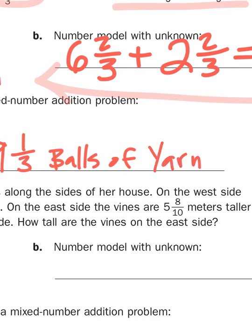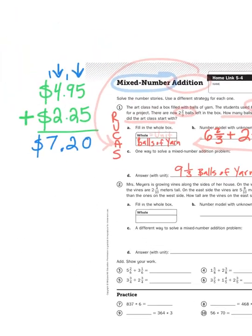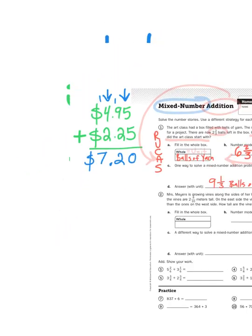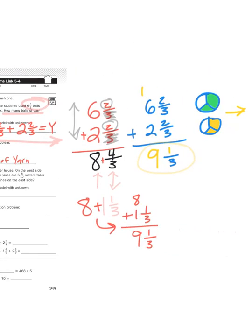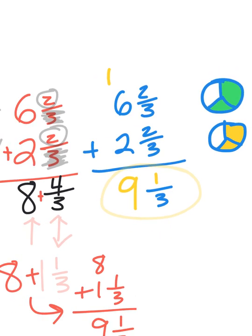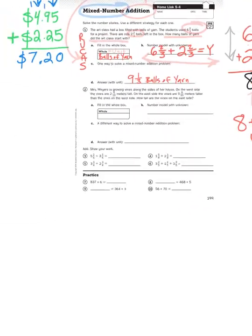So remember, friends, when you're adding mixed numbers, you have to start with the individual place values. And it's best to start from right to left like we do in any other addition scenario. And just like we do when we're adding amounts of money, we start with the cents and then we move on to the dollars. So you're going to start with the fractional parts, and then you're going to move on to the whole number parts. There's an extra step involved there, but I am confident that you can do it.